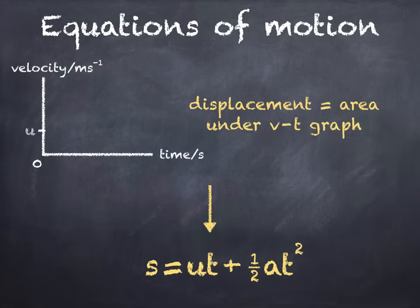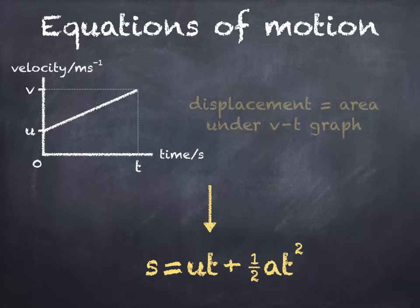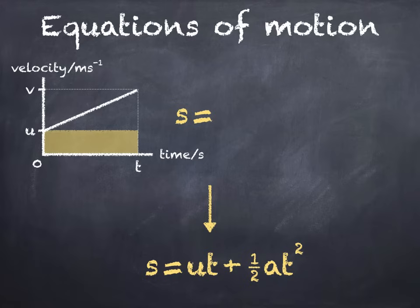Imagine an object accelerating uniformly from initial velocity u to final velocity v in time t seconds. The displacement s is found from the area under the graph. So firstly we have this section, a rectangle. Its area can be found by multiplying its height by its length, giving us ut.